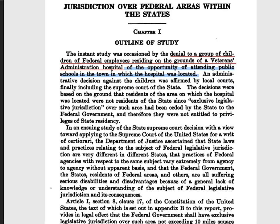They went into the state and sued in local court. The local court said no — go back to your federal lands and build your own schools. But building schools is not in the Constitution, so they couldn't do that. These hospitals are also not explicitly in the Constitution, though done through the necessary and proper clause. After they lost in local court, they sued in the state Supreme Court and lost again, because they had no right to use things they didn't pay for.